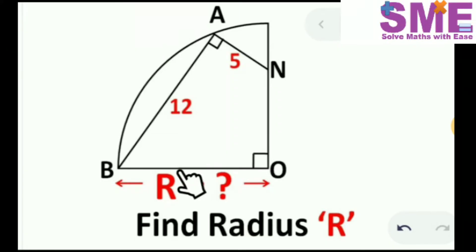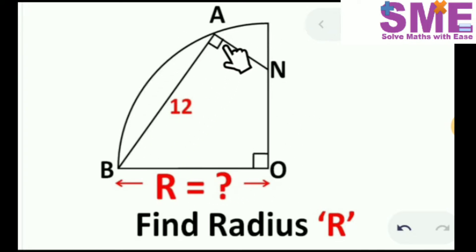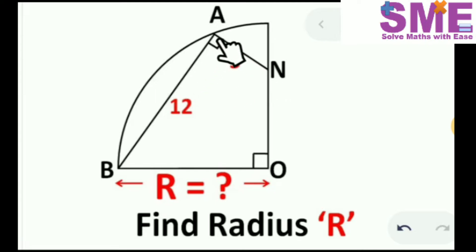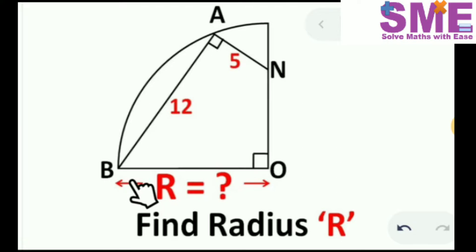Welcome to my channel Solve Maths with Eve. Today we have a problem to solve. In this figure we have a quarter circle and a chord AB present in this quarter circle. This line segment AN intersects this chord at 90 degrees and touches the boundary of the quarter circle. We need to find the radius of this quarter circle.